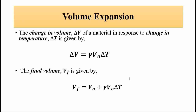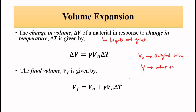For liquids, which we are interested in for this device, the volume expansion concept comes into play. The change in volume of a material — generally applied for liquids and gases — in response to a change in temperature is given by: delta-V = gamma × V0 × delta-T, where V0 is the original volume and gamma is the volume expansion coefficient. The final volume is: Vf = V0 + gamma × V0 × delta-T.